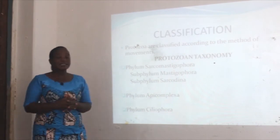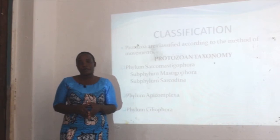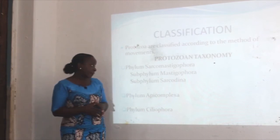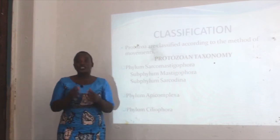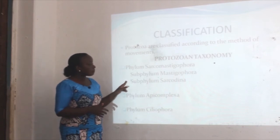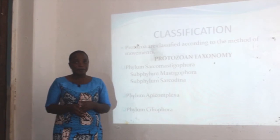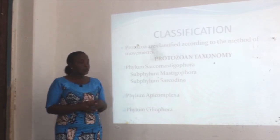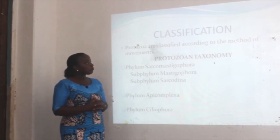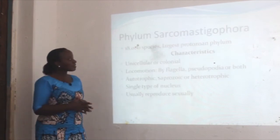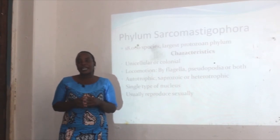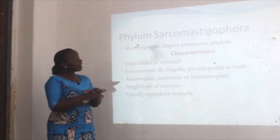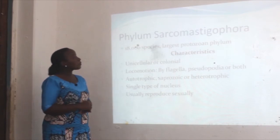Protozoans are classified according to their method of movement. There are three phyla in Kingdom Protista. The first is Phylum Sarcomastigophora, which is further divided into two subphyla: Subphylum Mastigophora and Subphylum Sarcodina. The second is Phylum Apicomplexa, and the last is Phylum Ciliophora. Phylum Sarcomastigophora consists of about 18,000 species and is the largest protozoan phylum in Kingdom Protista.